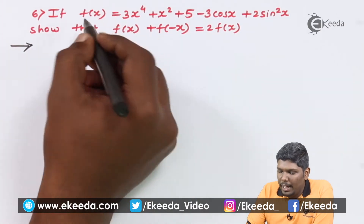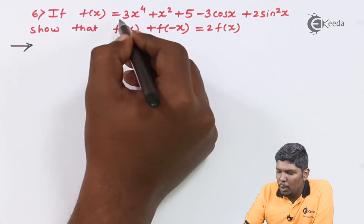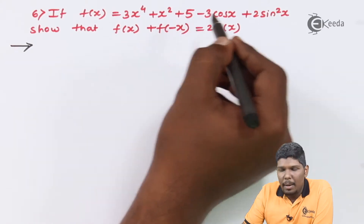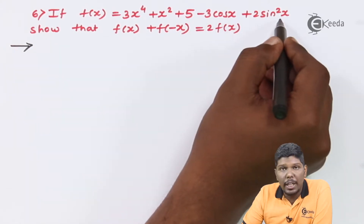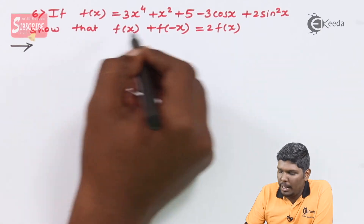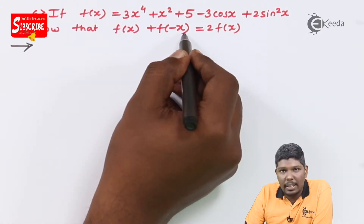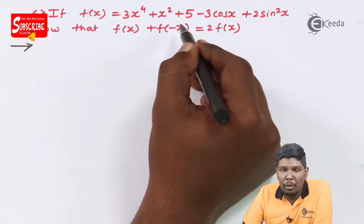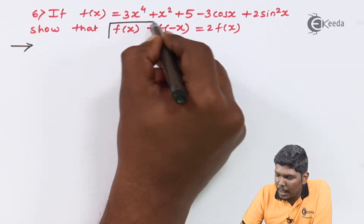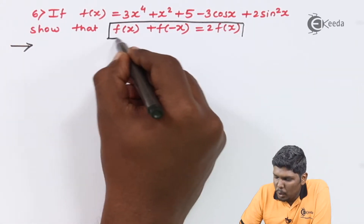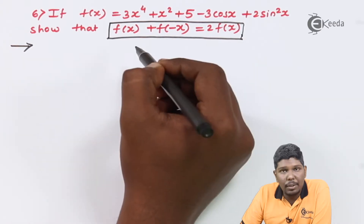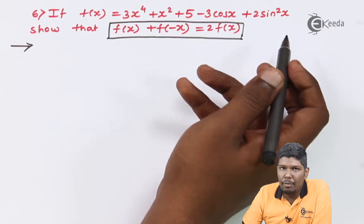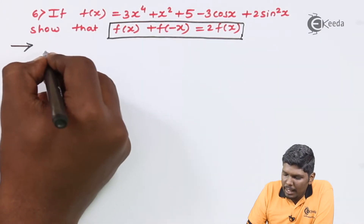Let us check the next type. If f(x) is equal to 3x raised to 4 plus x squared plus 5 minus 3cos(x) plus 2sin²(x), then show that f(x) plus f(-x) is equal to twice f(x). This is a sum in which we have to prove a particular mathematical equation, so we can start with the LHS first or the RHS first, whichever is convenient.